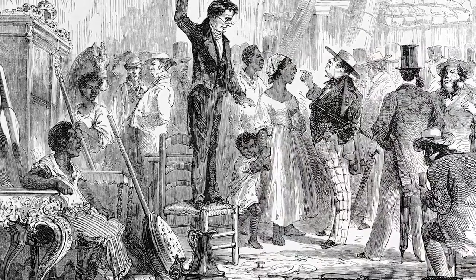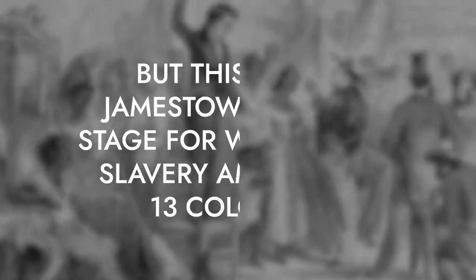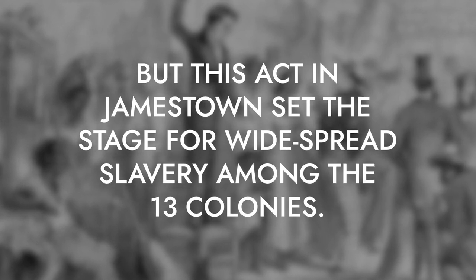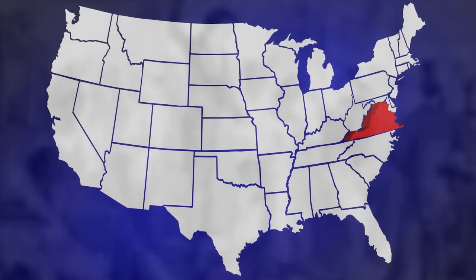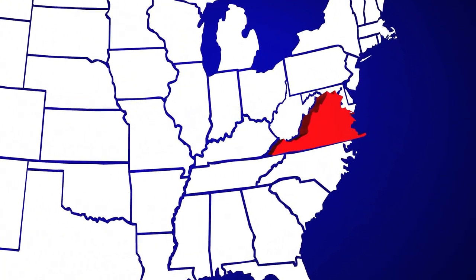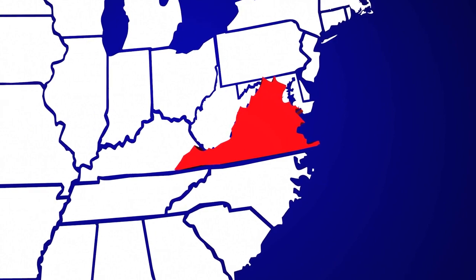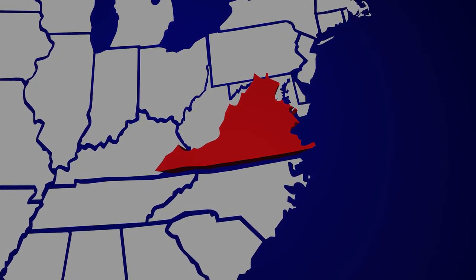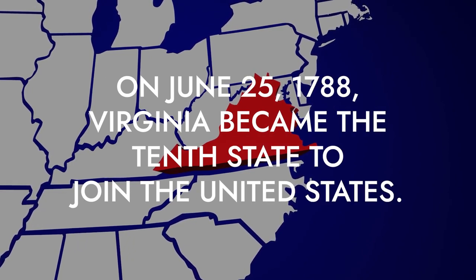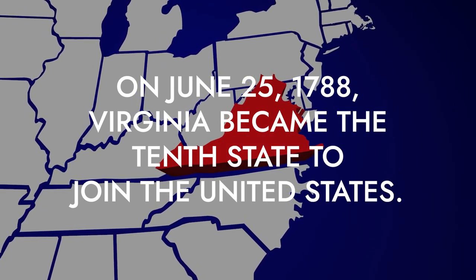Sadly, slavery was a part of American history before this time. But this act in Jamestown set the stage for widespread slavery among the 13 colonies. Jamestown served as the capital of Virginia until 1699, when it was later moved to Williamsburg. On June 25, 1788, Virginia became the tenth state to join the United States.